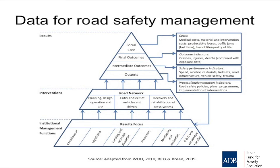Now for the important part — the top of the triangle. From all of these interventions and actions, there will be outputs, outcomes, or results that we need to assess. At the bottom level of the triangle, the outputs relate to our processes and implementation — our plans, policies, programs, and interventions. For example, doing more enforcement might be our activity. The next level up is intermediate outcomes: these are the measures we are trying to change. So enforcement might aim to reduce speeding — that is our output — and our intermediate outcome would be to measure whether the speed of motorists has actually changed.